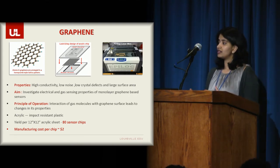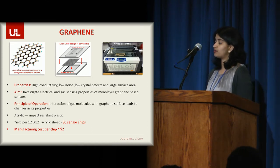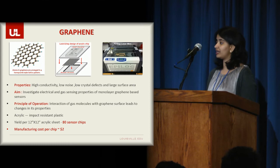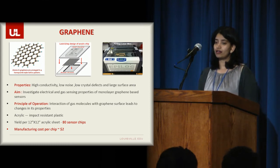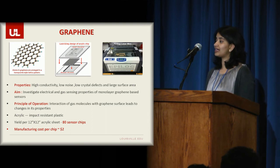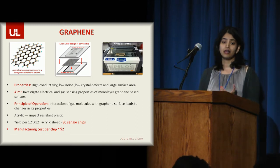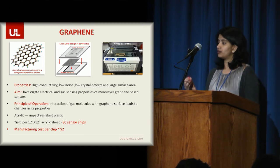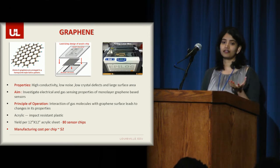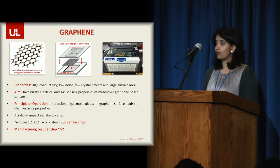Using these properties, we wanted to investigate the electrical and gas sensing properties of graphene in a sensor device, where the principle of operation would be the sensing element, which is monolayer graphene, exhibiting a change in its resistance when it is exposed to certain gases. And when the molecules from the gases absorb onto the graphene surface, it essentially shows a change in its conductivity or resistance.